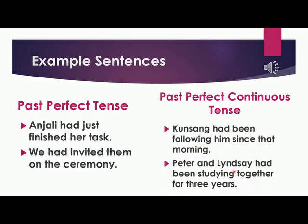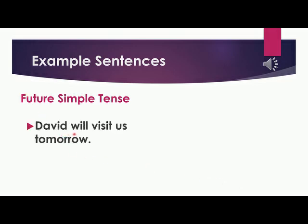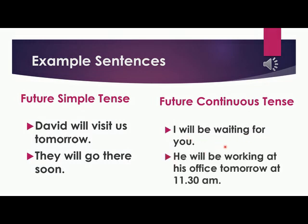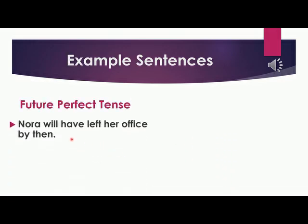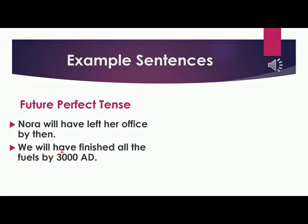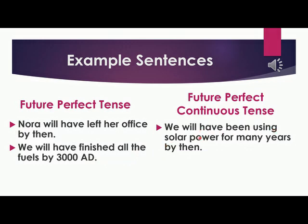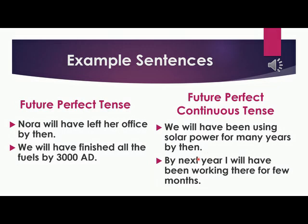Future simple tense: David will visit us tomorrow. They will go there soon. Future continuous tense: I will be waiting for you. He will be walking at his office tomorrow at 11:30 a.m. Future perfect tense: Nora will have left her office by then. We will have finished all the fuels by 3000 AD. Future perfect continuous tense: We will have been using solar power for many years by then. By next year, I will have been walking there for a few months.